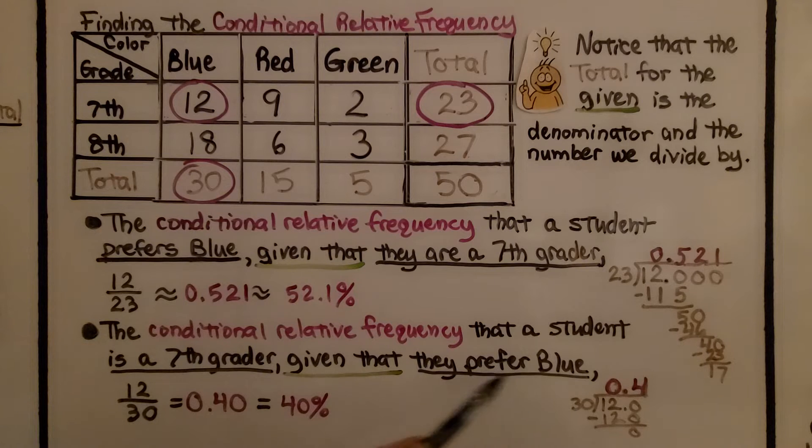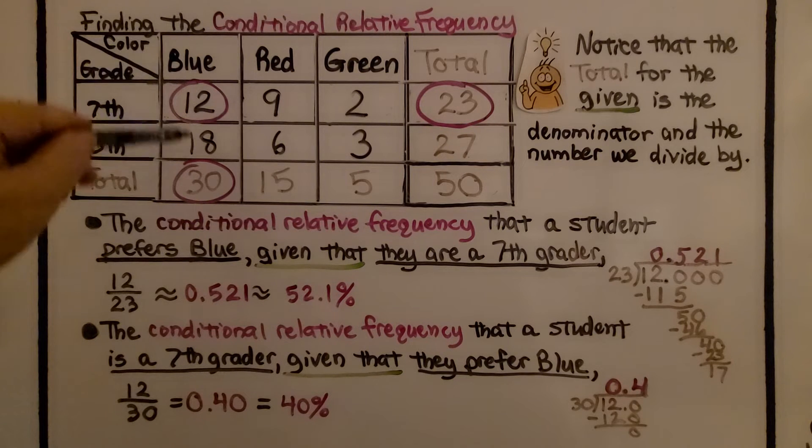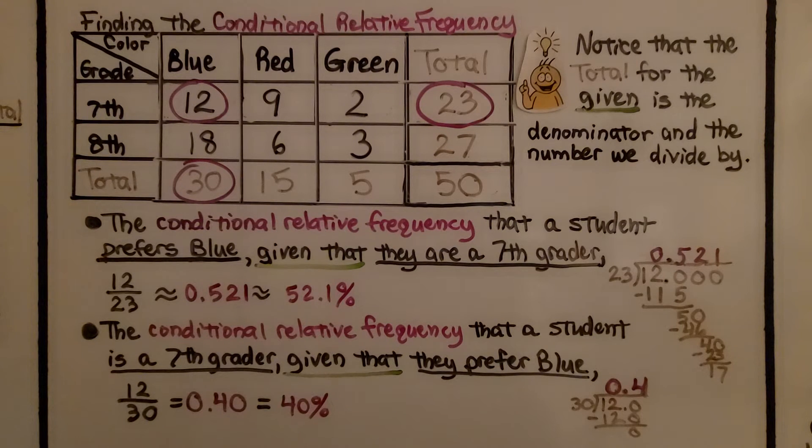now we're going to do twelve divided by thirty. Now that the blue is the second one, the given that, we're going to go straight down from blue. And we're going to do twelve divided by thirty, which when we divide, we get four-tenths or forty-hundredths, which is equal to forty percent.